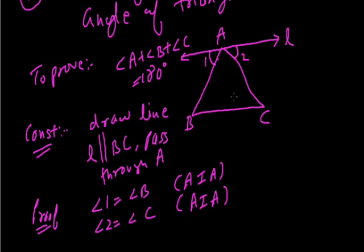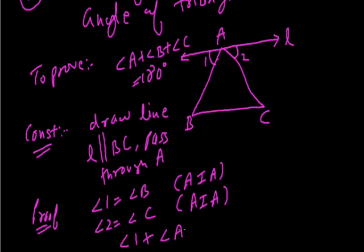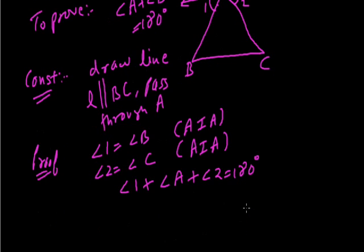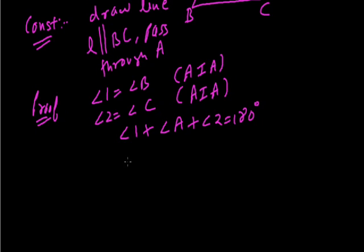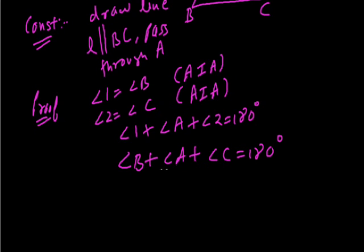Now as line L is a straight line, the angles made at point A on the same side of the line should sum to 180 degrees. So angle 1 plus angle A plus angle 2 equals 180 degrees. Now, since angle 1 is angle B and angle 2 is angle C, replacing them gives angle B plus angle A plus angle C equals 180 degrees. This proves that the sum of the interior angles of a triangle is 180 degrees.